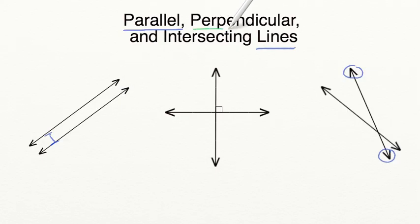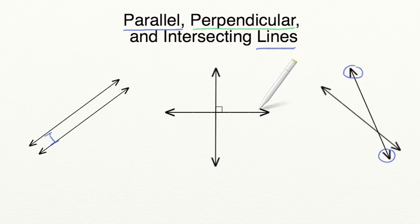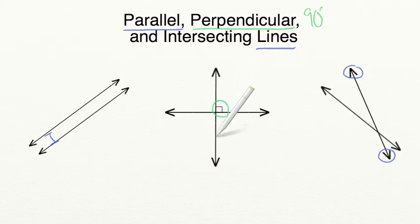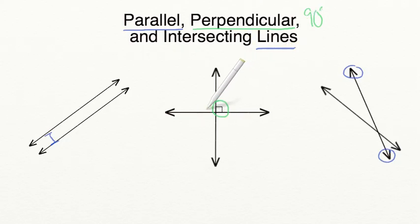Perpendicular lines are the opposite. Perpendicular lines intersect or cross each other, but they have to cross at a 90-degree angle. We can tell they're crossing at a 90-degree angle when we are shown a square in the corner. Perpendicular lines cross each other creating four 90-degree angles.